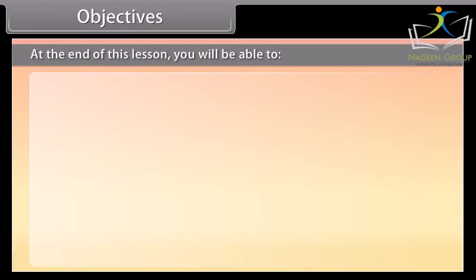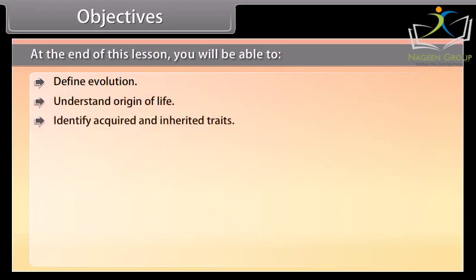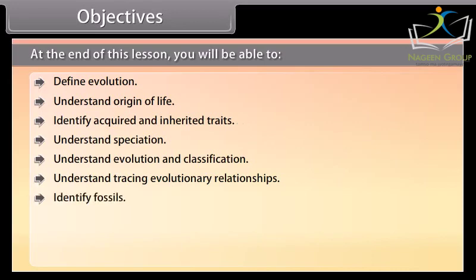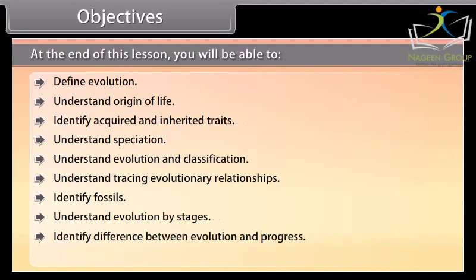At the end of this lesson, you'll be able to define Evolution, understand Origin of Life, identify Acquired and Inherited Traits, understand Speciation, understand Evolution and Classification, understand Tracing Evolutionary Relationships, identify Fossils, understand Evolution by Stages, identify the difference between Evolution and Progress, and understand the process of Human Evolution.